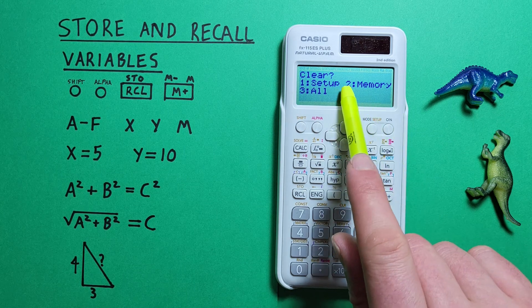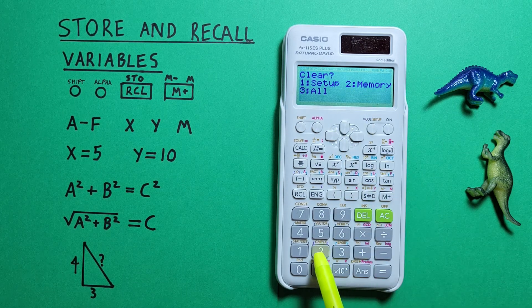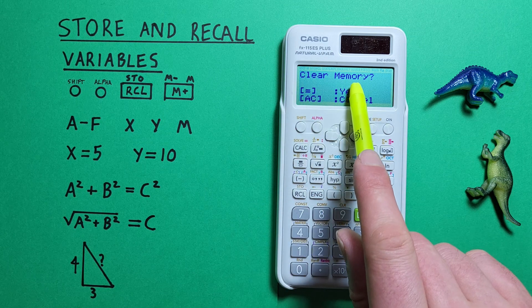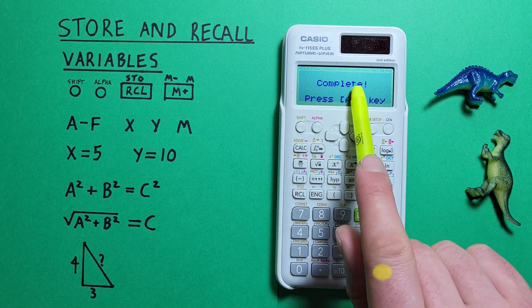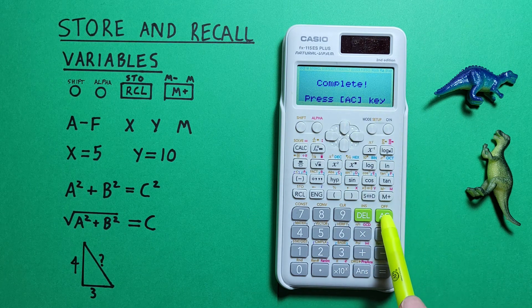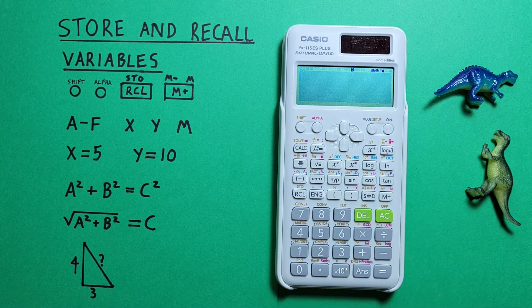And then if we select number 2, memory, it'll ask us to confirm and press equals. It'll say complete, and we can clear it here. And now all our memory slots have been cleared.